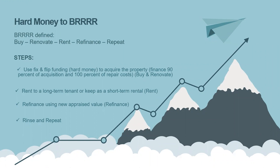Traditional hard money loans today are 80–90% of purchase price and 100% of repair costs. That means you need a 10–15% down payment plus closing costs, plus you have to debt-service the property each month on an interest-only payment. We have options depending on your financial situation where we could potentially fund 100% of this. BRRRR, for anyone that doesn't know, stands for buy, renovate, rent, refinance, repeat.